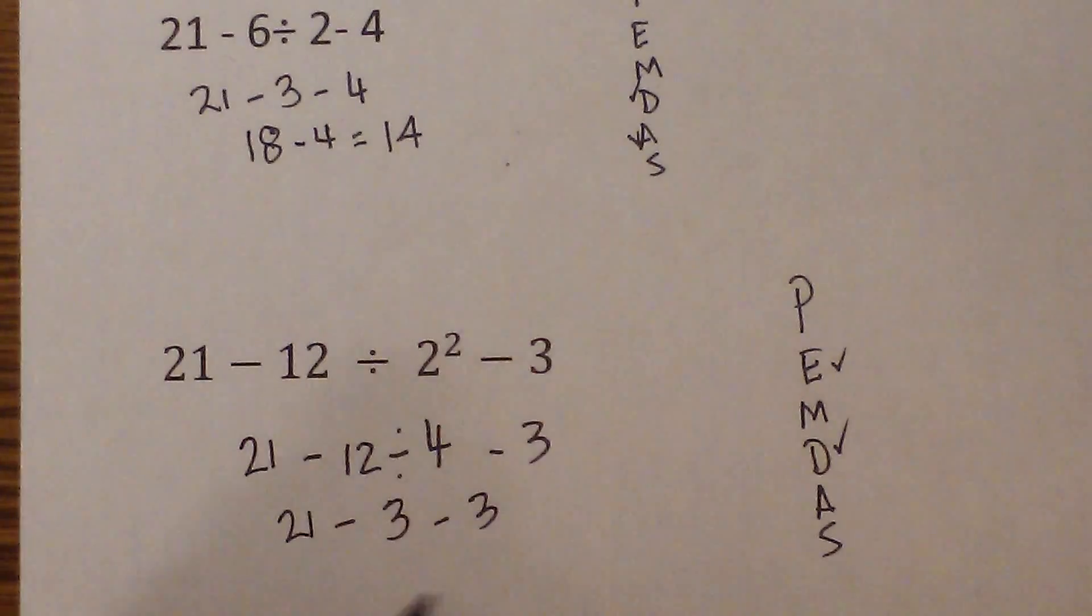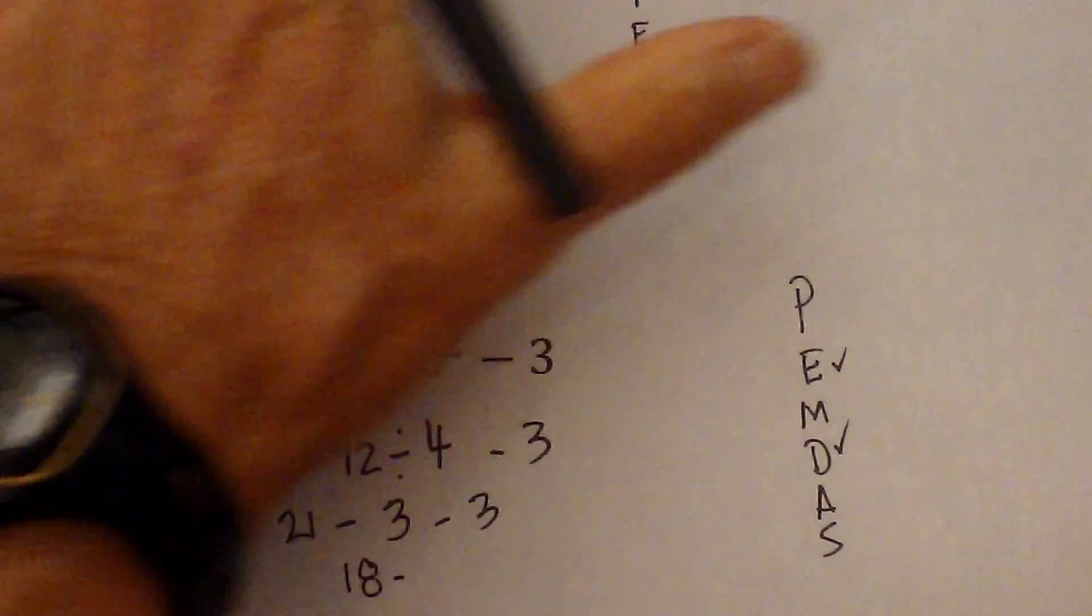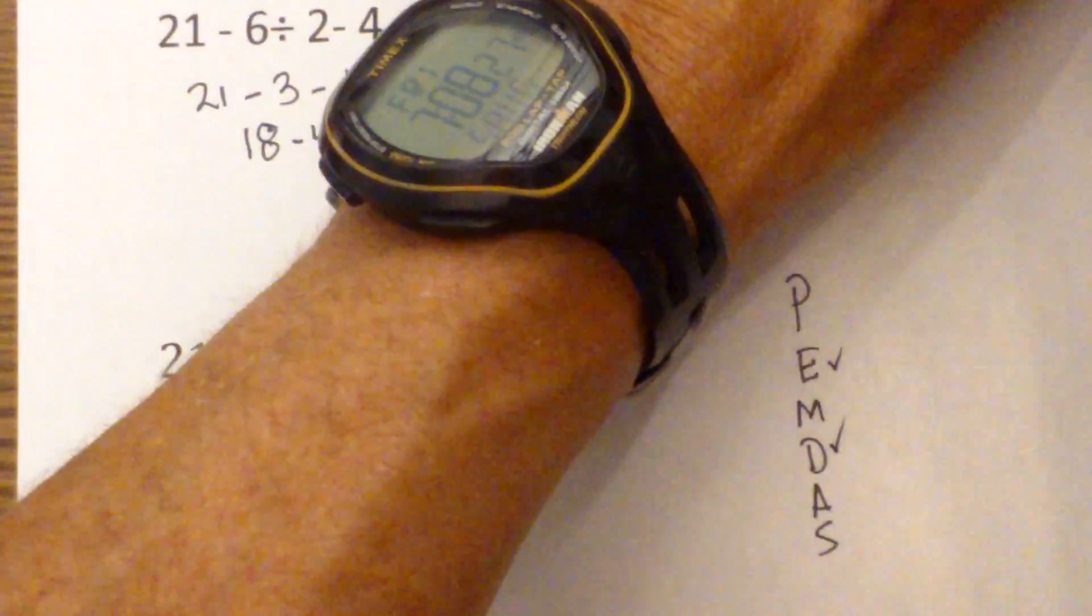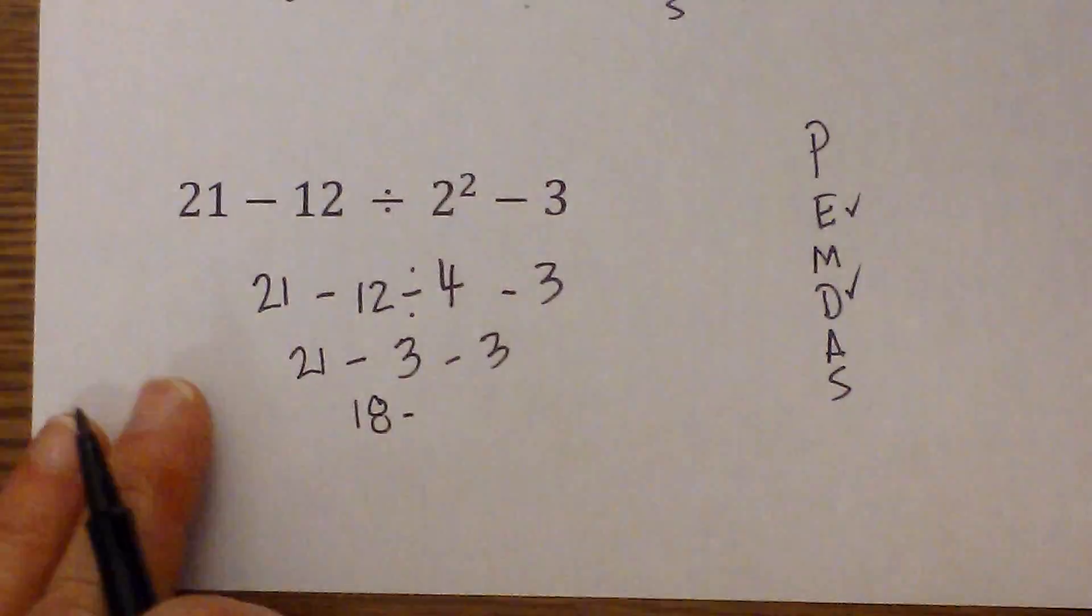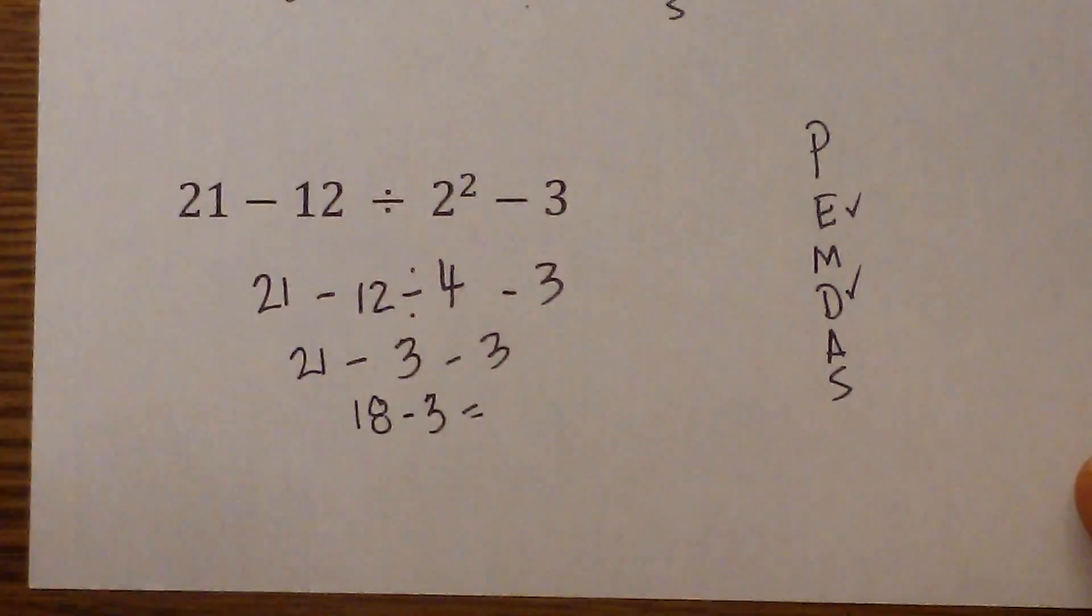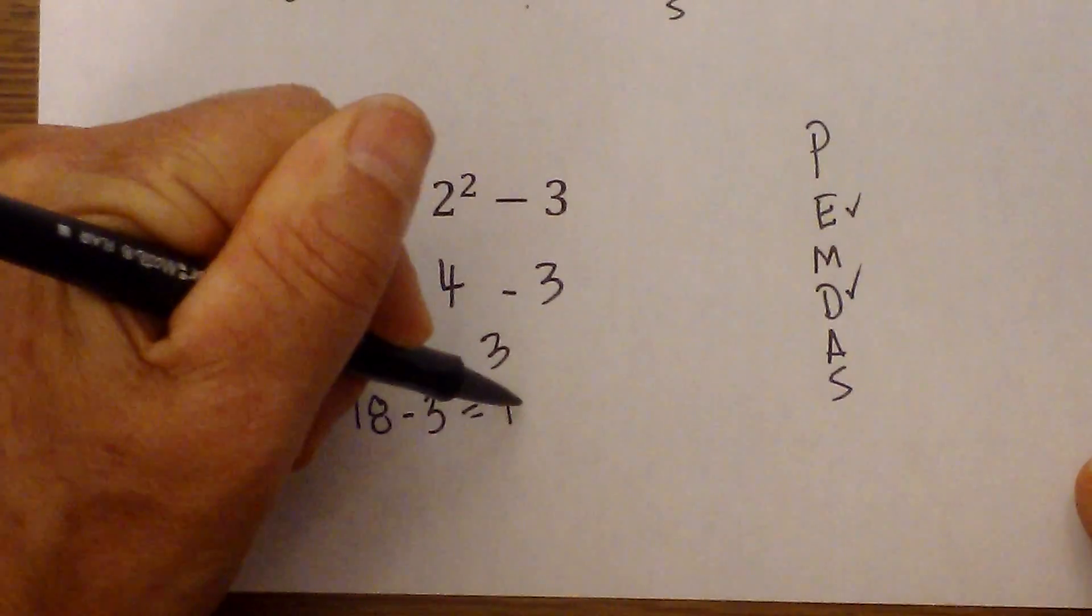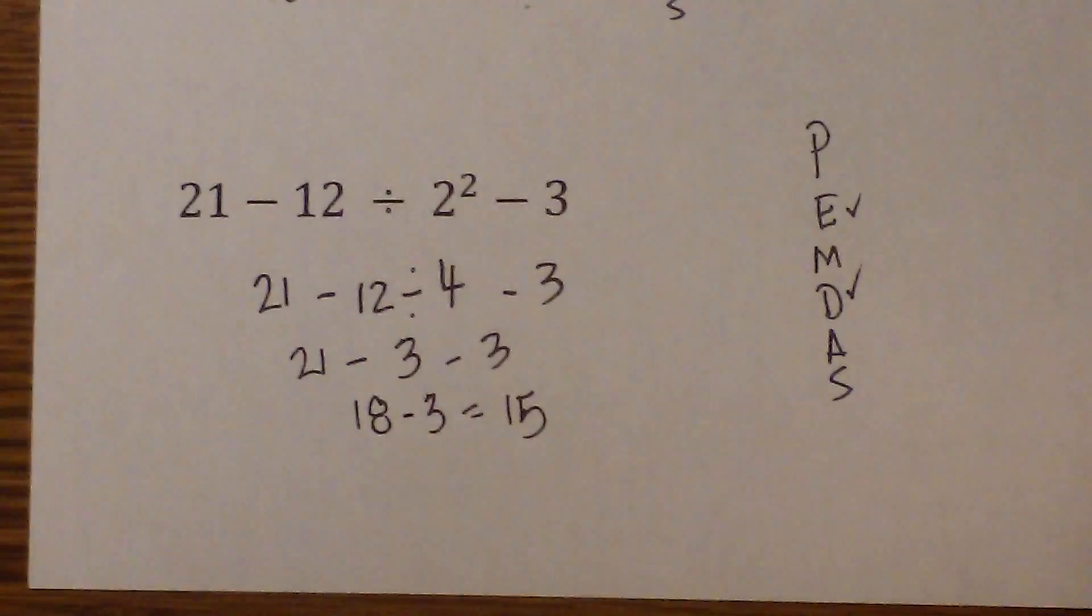Now we do subtraction. We go from left to right. 21 minus 3 is 18. Can we see this? Let me move this up just a little bit. 21 minus 3 is 18. 18 minus 3 is 15. So our answer is 15.